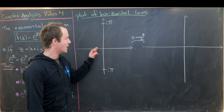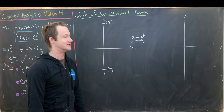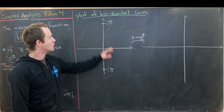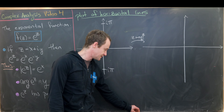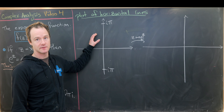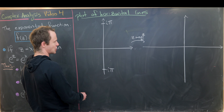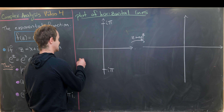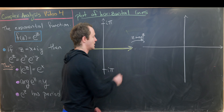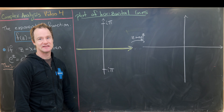Let's get a picture of what happens when we take something in the z-plane and map it into the w-plane under w equals e to the z. We'll focus on what happens to horizontal lines — starting with something easy like the real axis. For the real axis, the imaginary part is always zero, so here we're just getting e to the x.